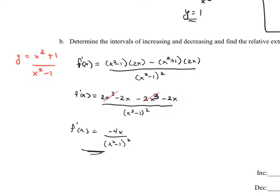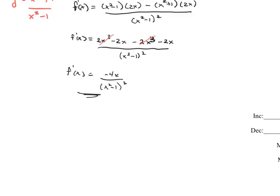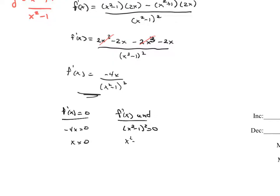To find critical values, the derivative equals 0 when the numerator equals 0: negative 4x equals 0 gives x equals 0. The derivative is undefined when the denominator equals 0: x squared minus 1 quantity squared equals 0, giving x equals negative 1 and x equals 1. So the potential critical values are 0, negative 1, and 1. However, x equals negative 1 and x equals 1 are vertical asymptotes where the function is undefined, so they cannot be maxima, minima, or inflection points. Only x equals 0 is a true critical value.